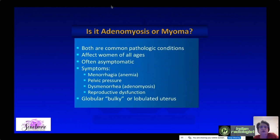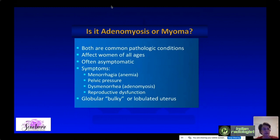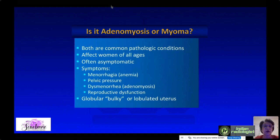The most common question we need to answer is: is that adenomyosis or is that a myoma? Both are very common pathological conditions affecting women of all ages. They're often asymptomatic, but symptoms can include pelvic pressure, menorrhagia — occasionally severe enough to cause anemia — dysmenorrhea (particularly with adenomyosis), and sometimes reproductive dysfunction, for example with submucosal myomas.